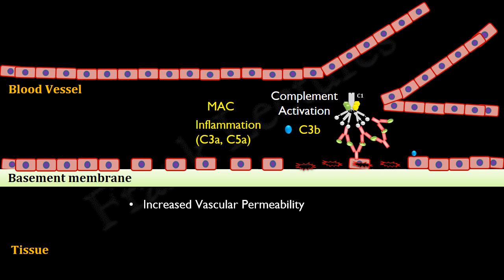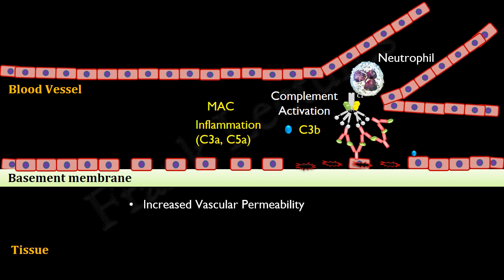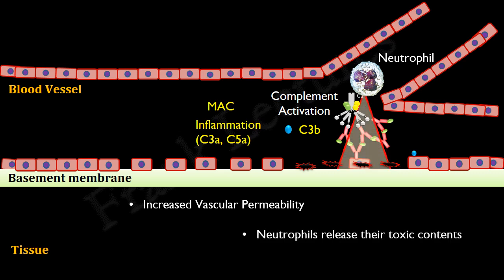During these complement reactions, leukocytes such as neutrophils are also recruited to the site of damage. They try to phagocytose the immune complexes, but being unable to do so, they release their toxic contents and enzymes. This further damages the endothelial cells and the basement membrane. If this damage continues, inflammatory mediators and other small immune complexes can enter the underlying tissue, further damaging it through increased inflammatory response and complement-mediated reactions.